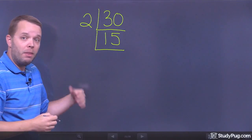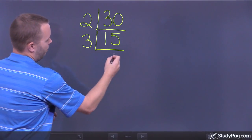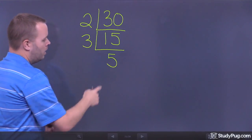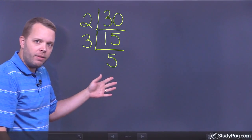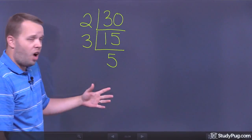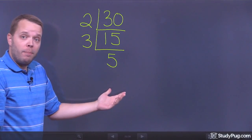2 doesn't work, but 3 does. So, let's divide 3 into 15. Well, 15 divided by 3 is 5. When I get down here, I've hit another prime number. I can't divide anything more out of that. So, in other words, I stop. All of the numbers that are outside of your L's are your prime factorization.